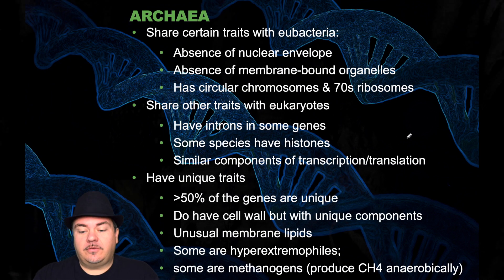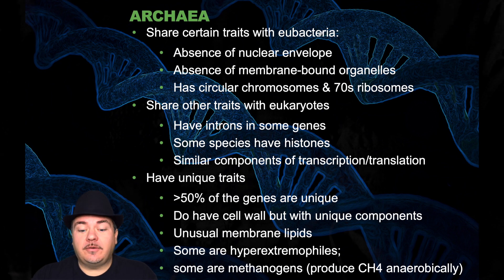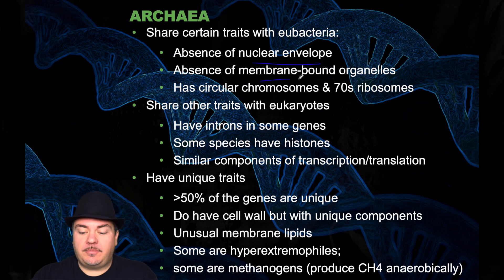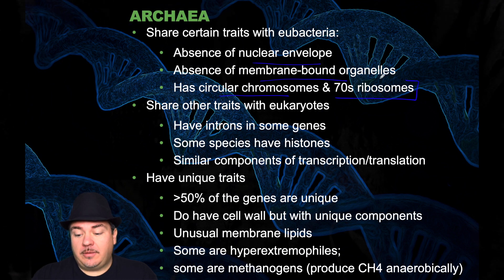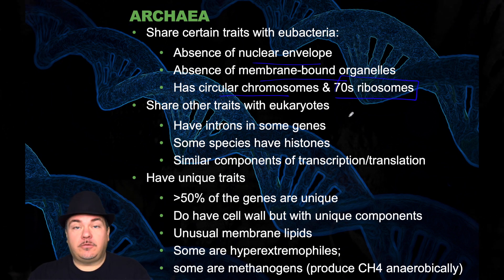First is the archaea. The archaea share certain traits with bacteria. For example, they don't have a nuclear envelope or any membrane-bound organelles. They have circular chromosomes instead of linear chromosomes. And the ribosomes look like prokaryotic ribosomes, not eukaryotic ribosomes.